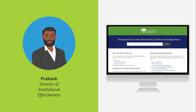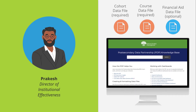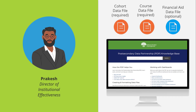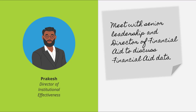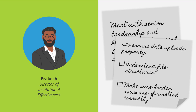Prakash begins by reading the PDP knowledge base. He sees that there are two required files — cohort data and course data — and one optional file for financial aid data. Prakash makes a note to speak with senior leadership and the Director of Student Financial Aid on whether to include the financial aid data. He also makes note of the file structures, specifically the header rows, to ensure the data will upload properly.